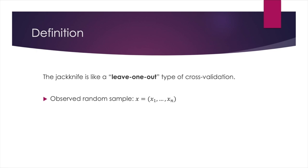So let x be an observed random sample and define the i-th Jackknife sample, x subscript i, be the subset of x that leaves out the i-th observation xi. So the Jackknife sample xi would be x1 all the way to xi-1, leaving out xi, then from xi plus 1 all the way to xn.